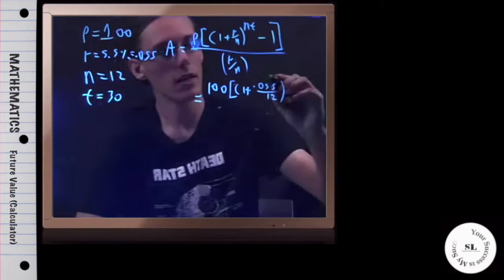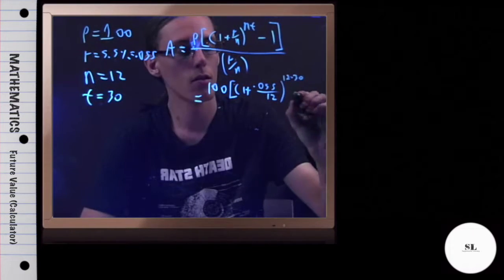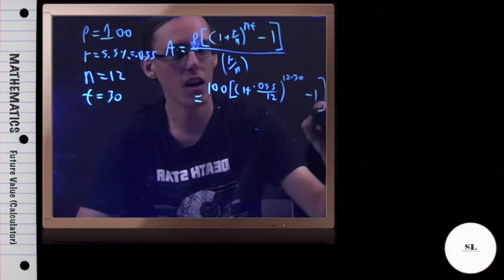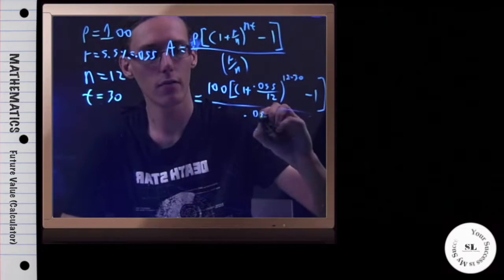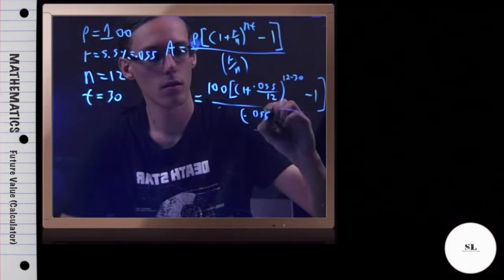Raised to the 12 times 30, all that minus 1, all that divided by 0.055 divided by 12.